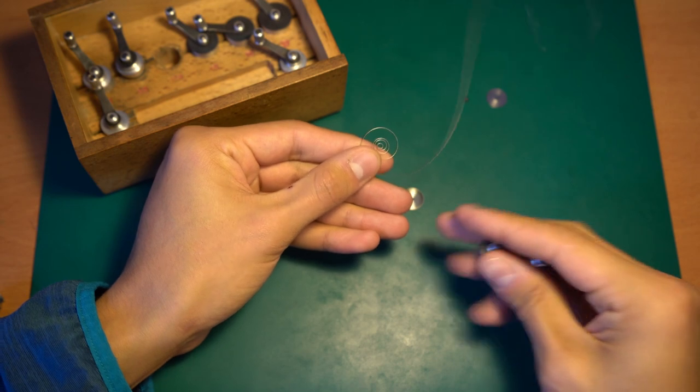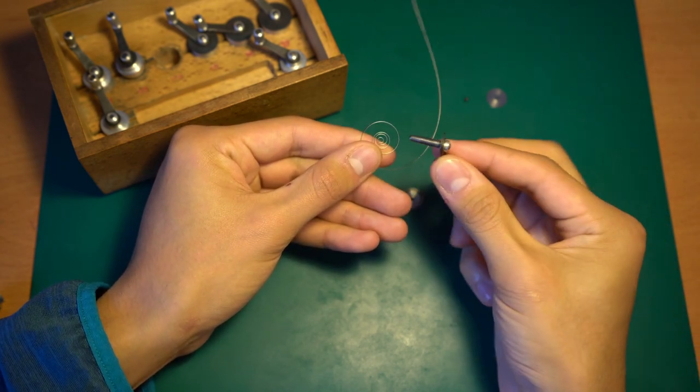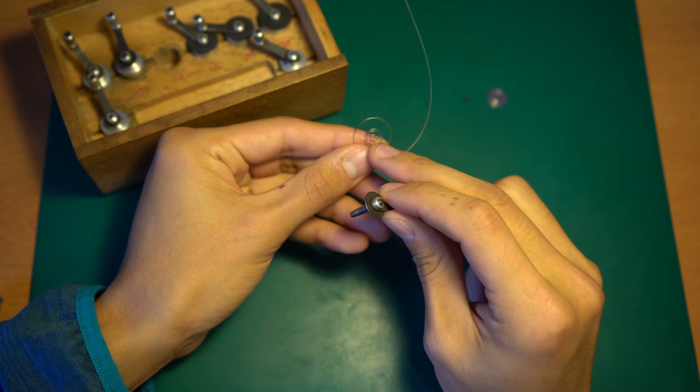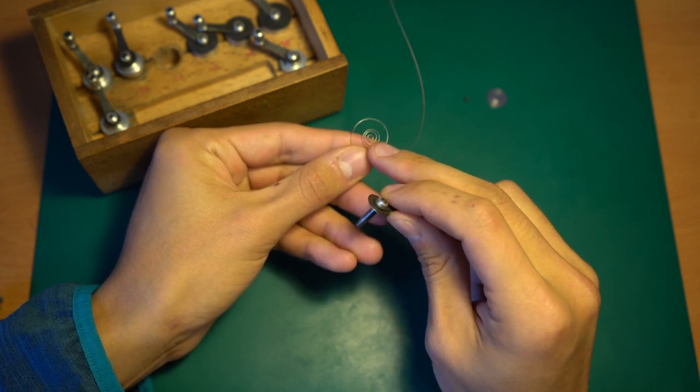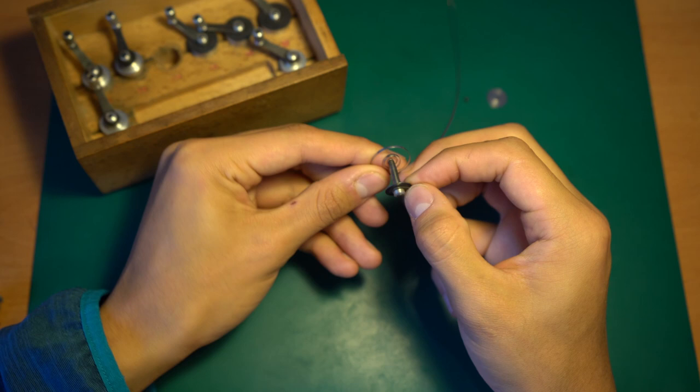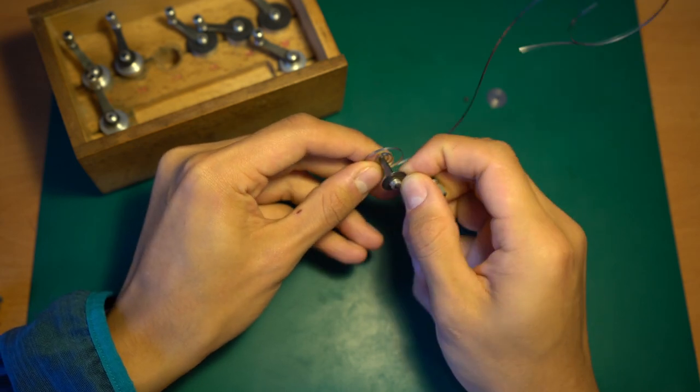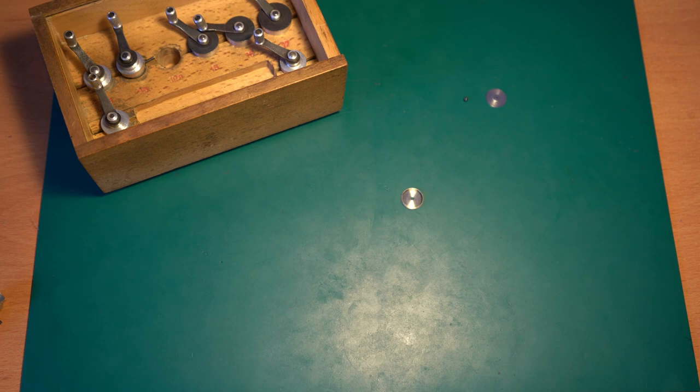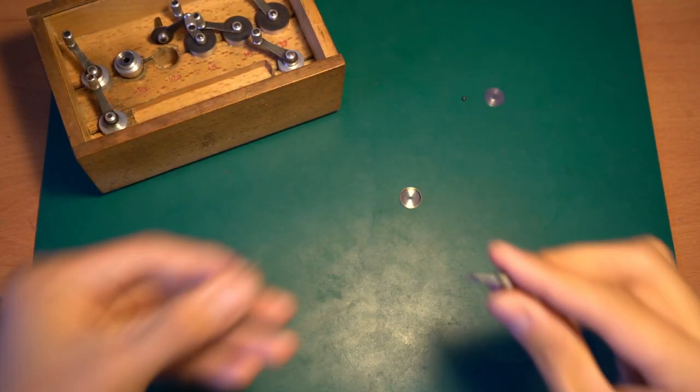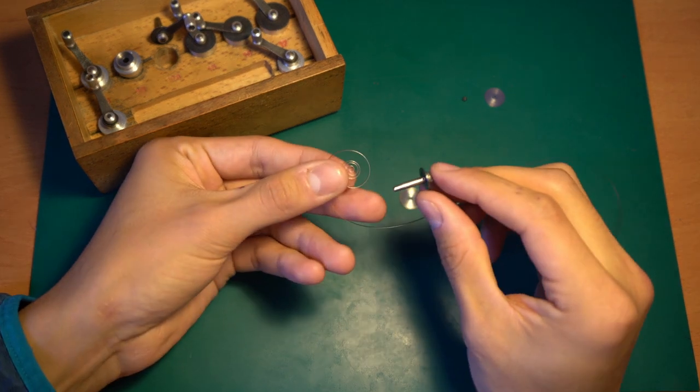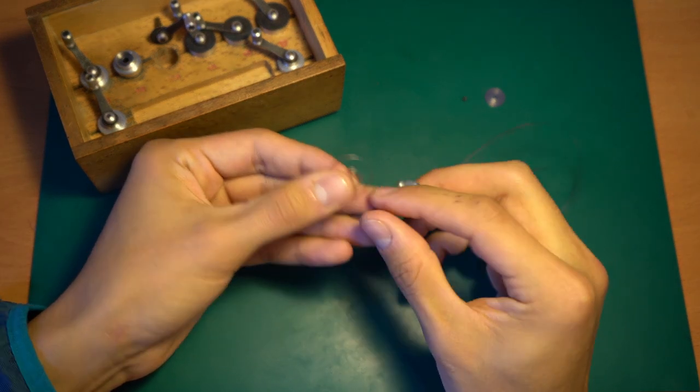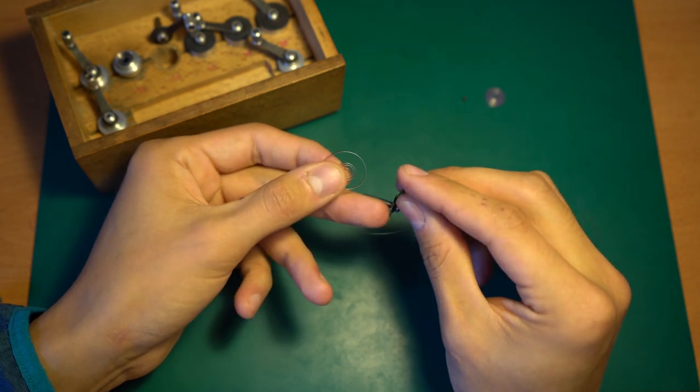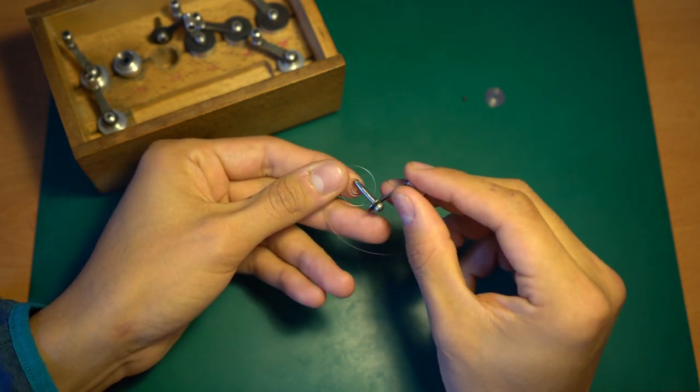As a small demonstration of how you use these, we have the mainspring with the little center hole where the arbor gets pressed in. These do seem a bit tight, so I'm getting one size smaller. So you press this in - it should be tight but not too tight. There should be some friction.